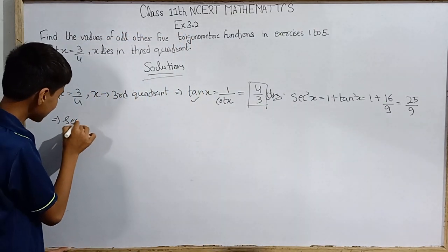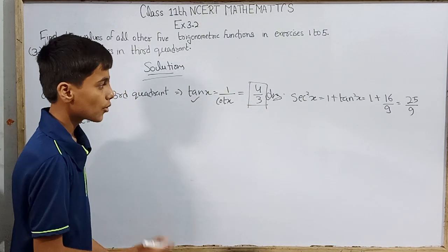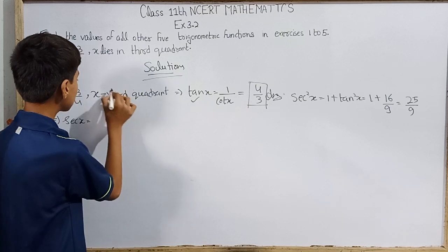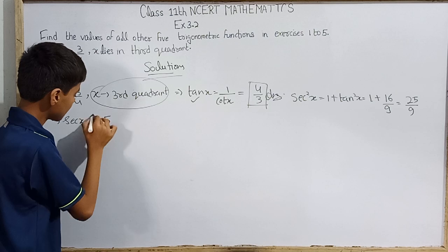So again, sec(x)'s value will be plus or minus 5/3. Which value will it be? Negative, because x lies in the third quadrant. So this is minus 5/3.